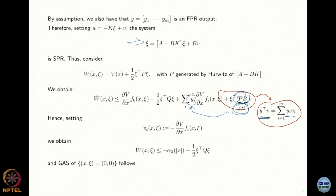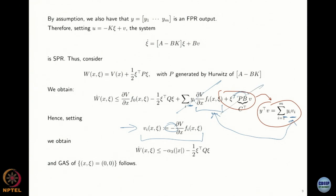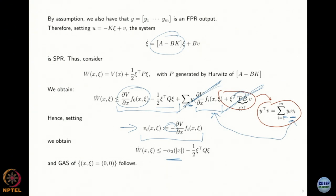This means the term xi-transpose P B v-new is nothing else than the sum of all outputs yi times the new inputs vi — essentially y-transpose times the new input. So all you have to do is take v-new equal to minus the nonlinear terms with a minus sign: since those terms appear multiplied by y, you just match them, all those terms go away, and you are left only with the negative class K term and the Hurwitz term.